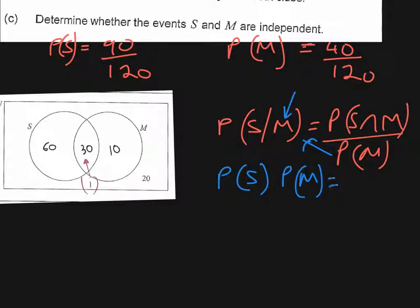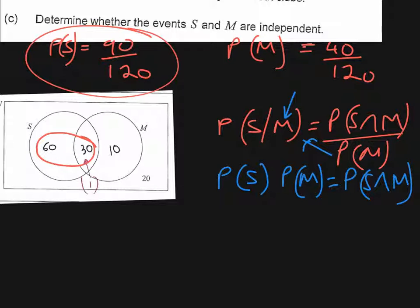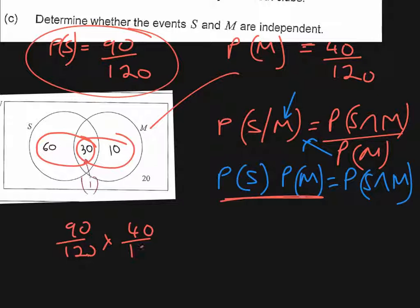So therefore we could multiply by the denominator and we'd end up with the probability of S multiplied by the probability of M equals the probability of S and M. So we can check this on our diagram. We've got here the probability of sport is these two added together over the total. And the probability of music is again these two here over the total. So if we do 90 over 120 multiplied by 40 over 120, we're going to get an answer of a quarter.